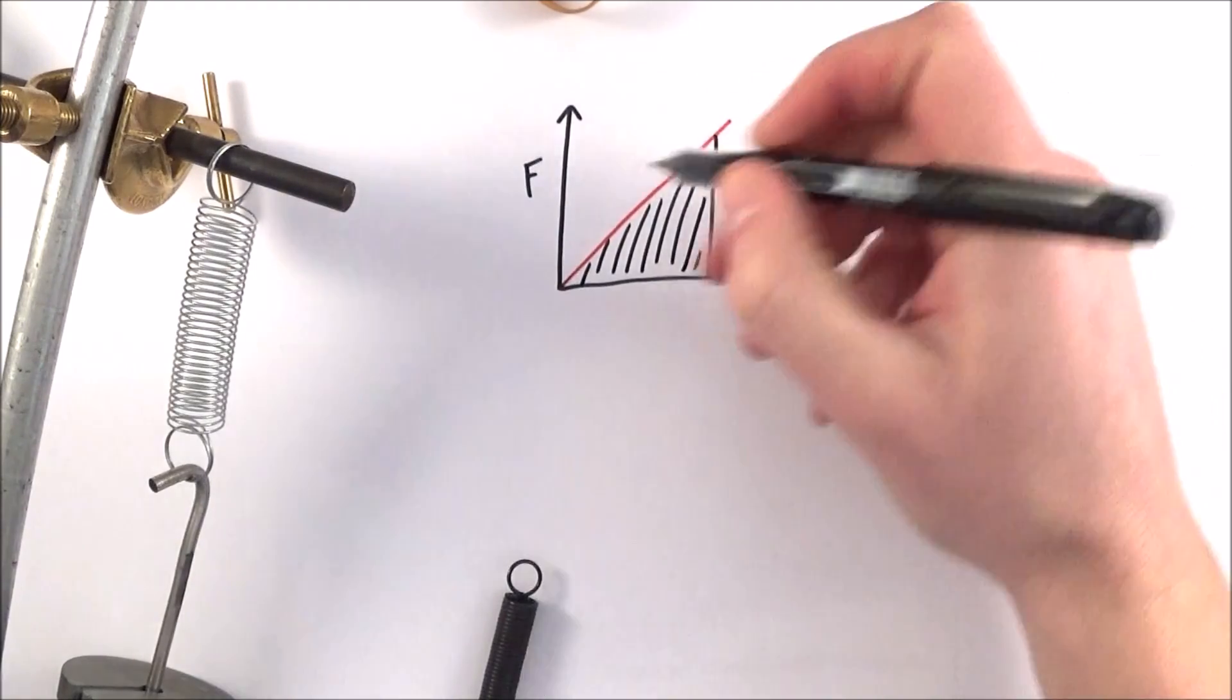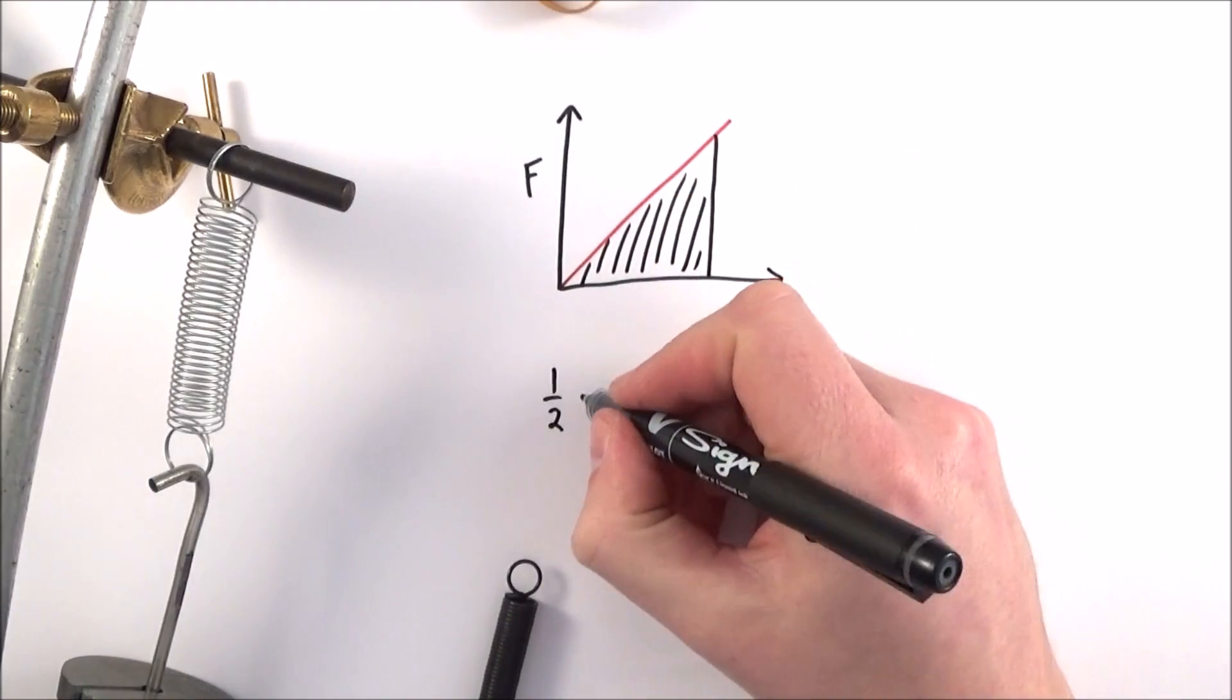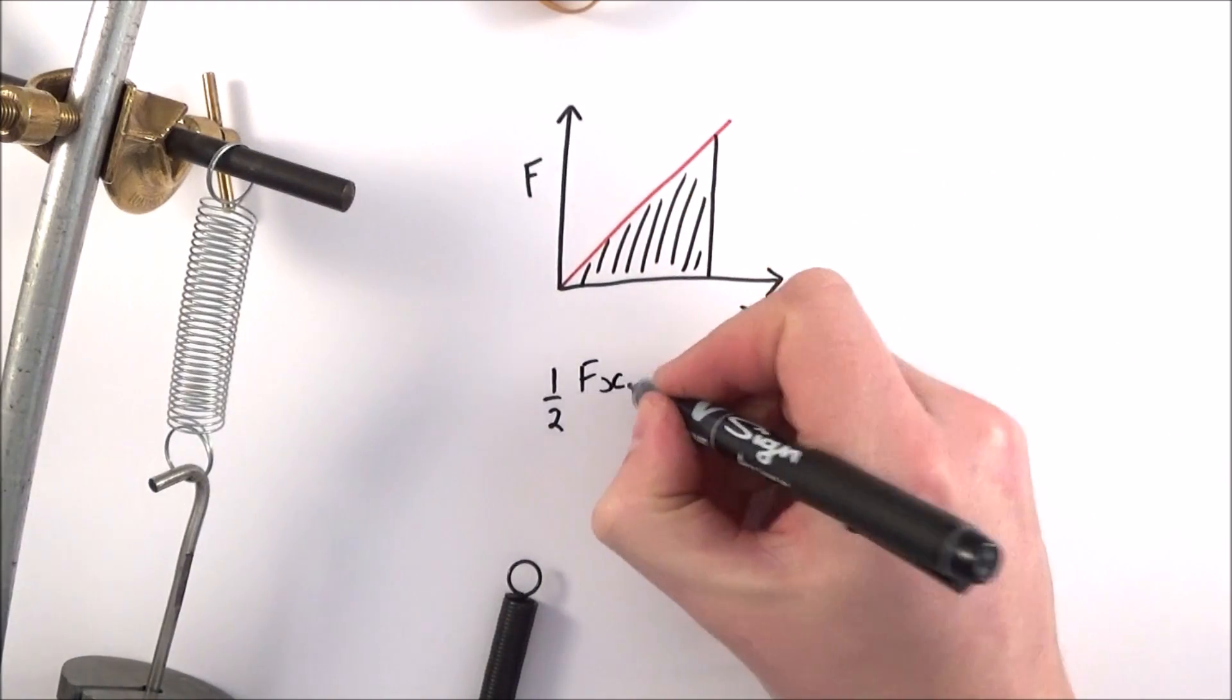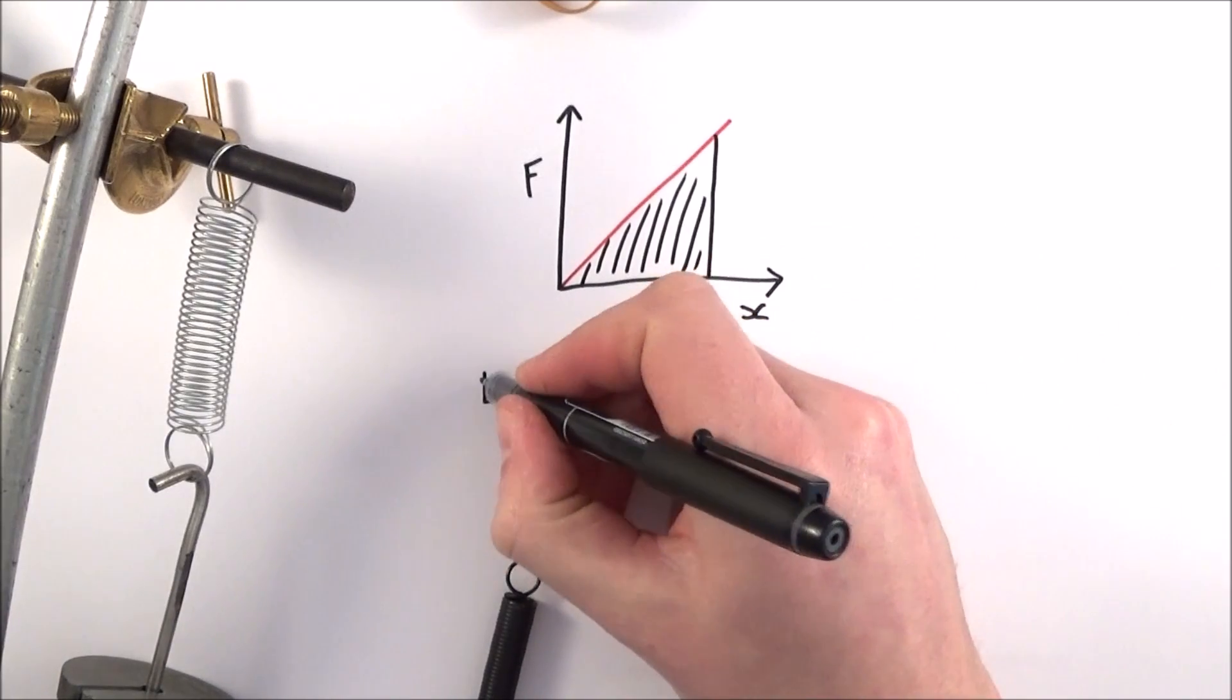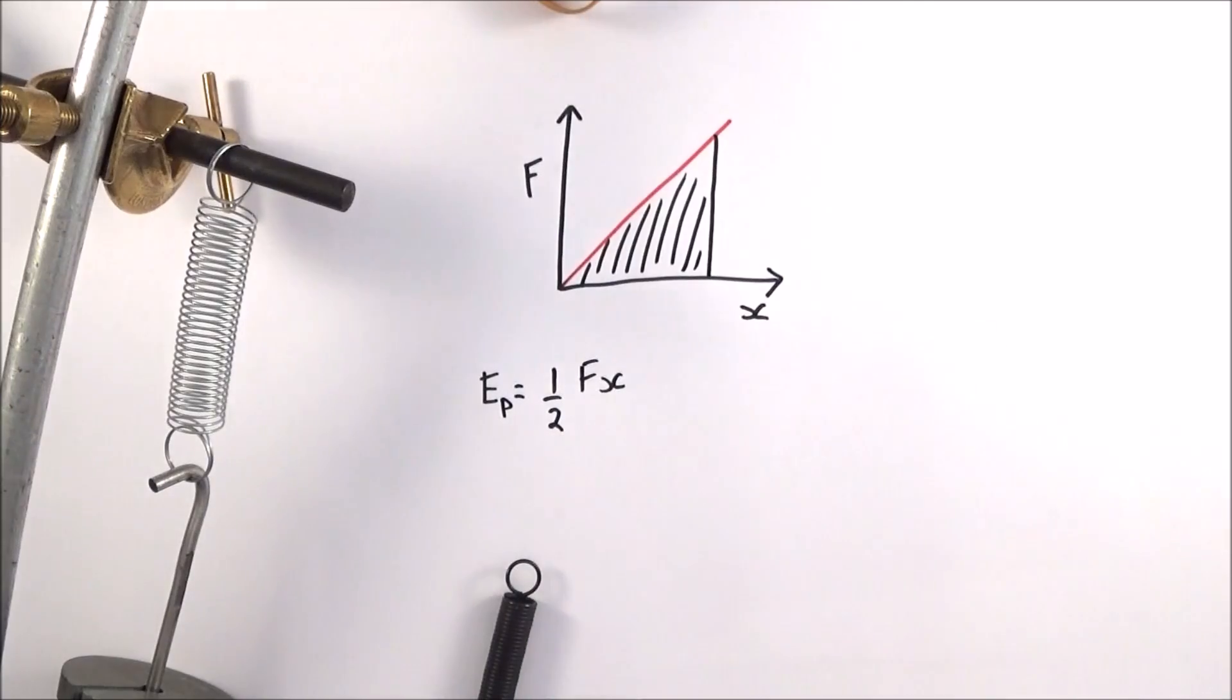And we can say that the area of this graph here is equal to a half the base times the height, so a half fx. And this is equal to the elastic potential energy that's stored, so it's equal to a half fx.